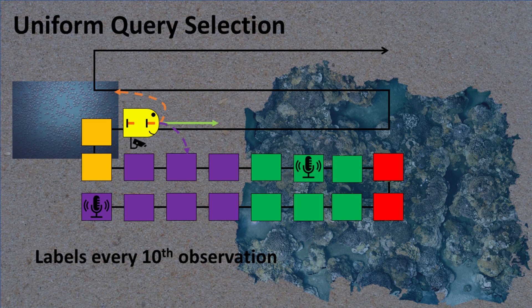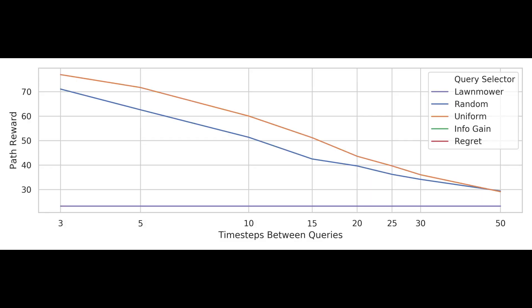The next approach is uniform selection, which has the robot always try to send back the most recent image that it took. This gives the expert the most up-to-date picture possible of what the robot is doing. Looking at the results, this approach collects much more reward per time step than asking random queries.